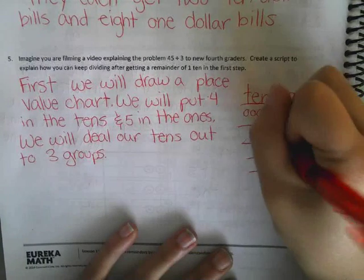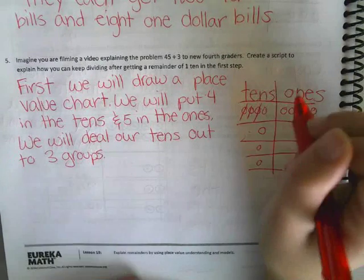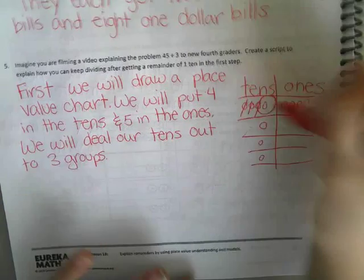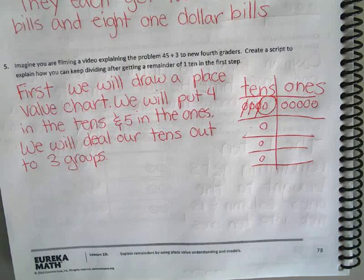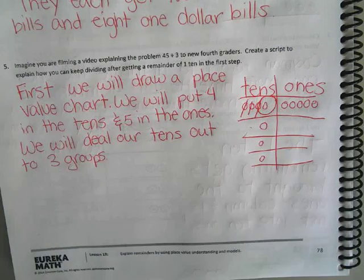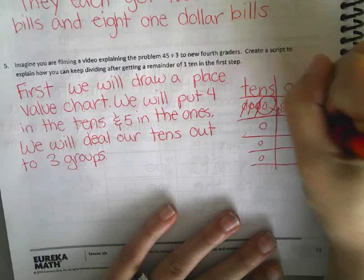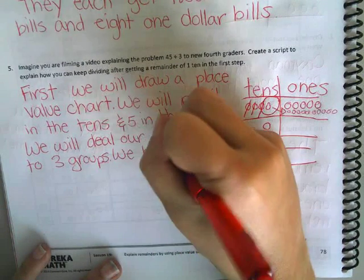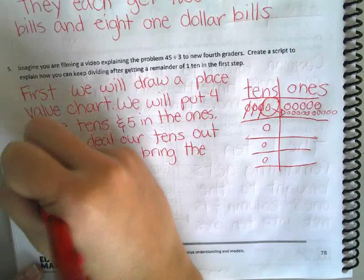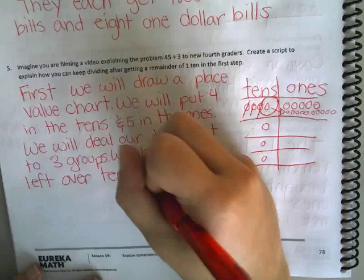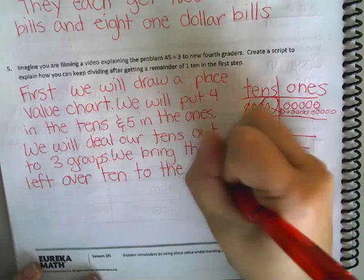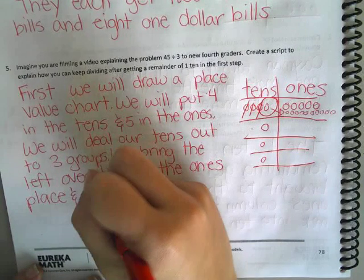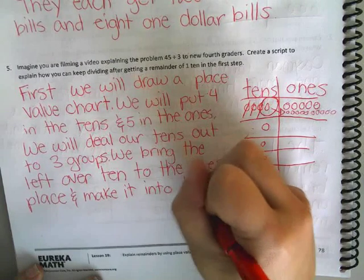Let's distribute our 10s: one, two, three. This is where it gets tricky — what do we do with this leftover 10? Lana said: we bring the leftover 10 to the 1s spot and make it into 10 ones.